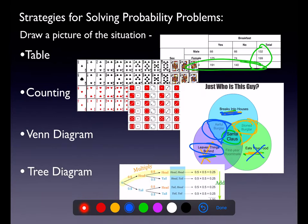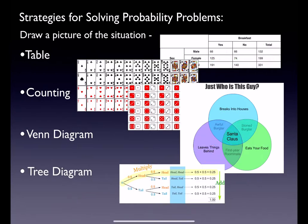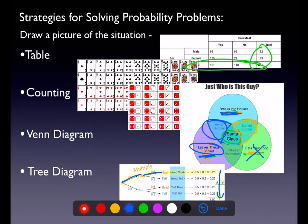For tree diagrams, you multiply along the appropriate branches, and the branches should always total out to 1. If you have more than one branch highlighted, you'd add the two respective probabilities because all of those branches are disjoint events.